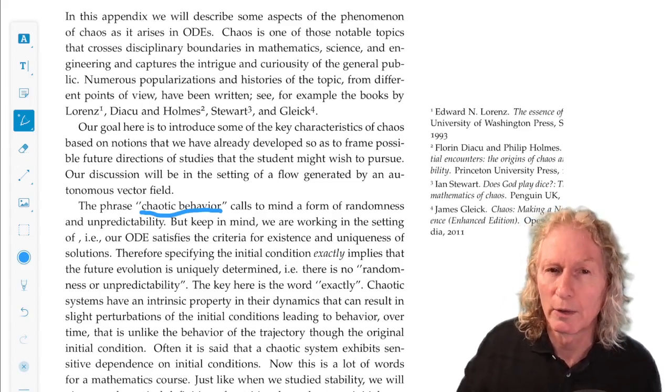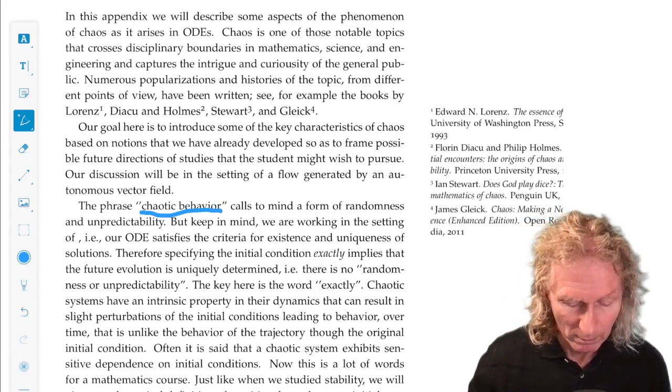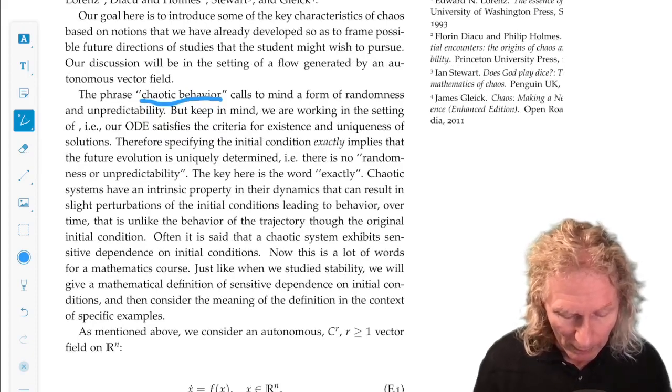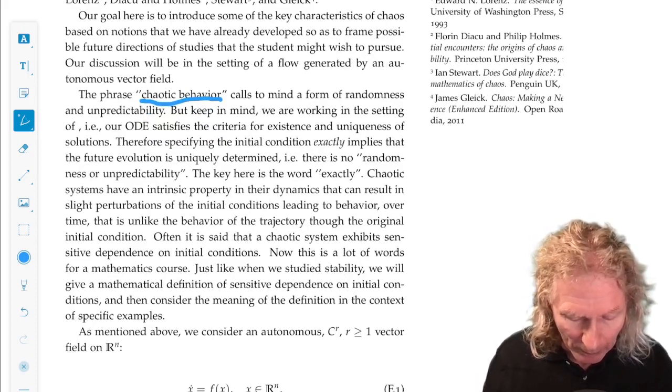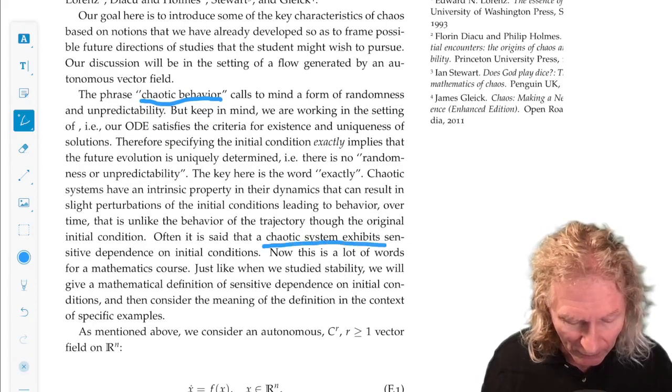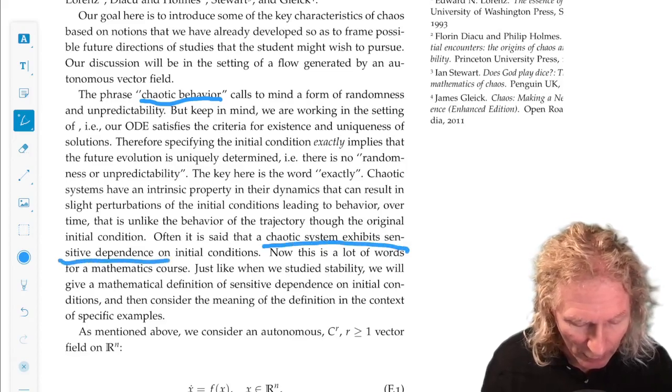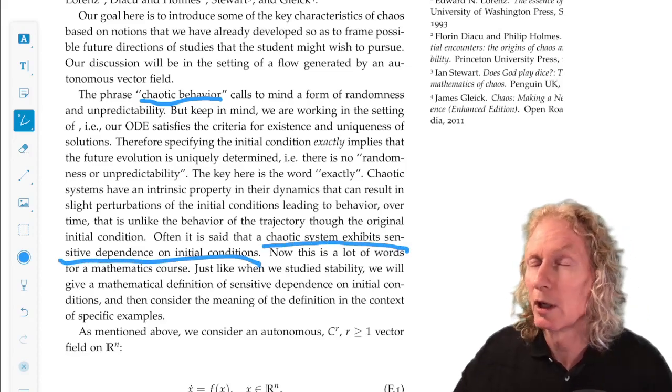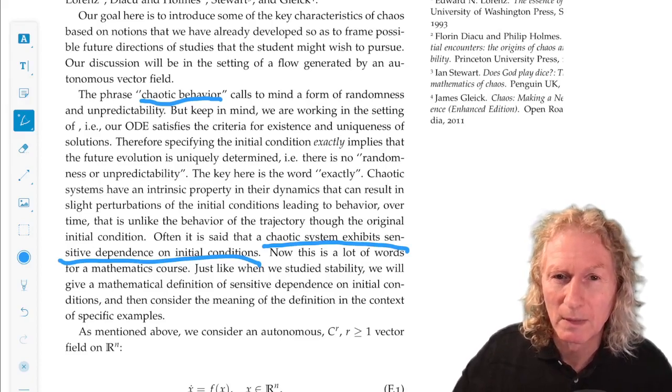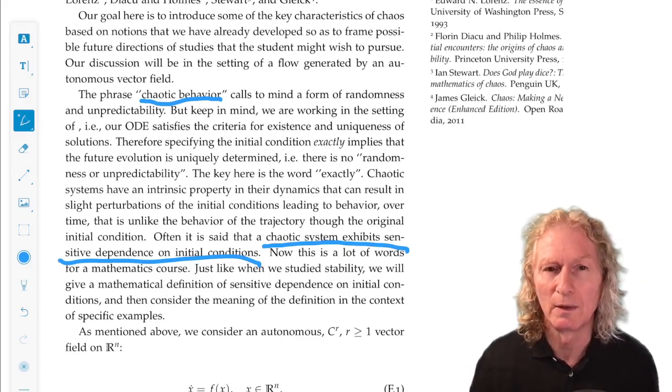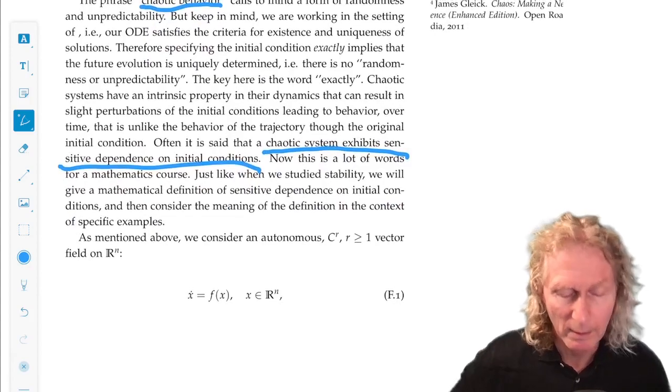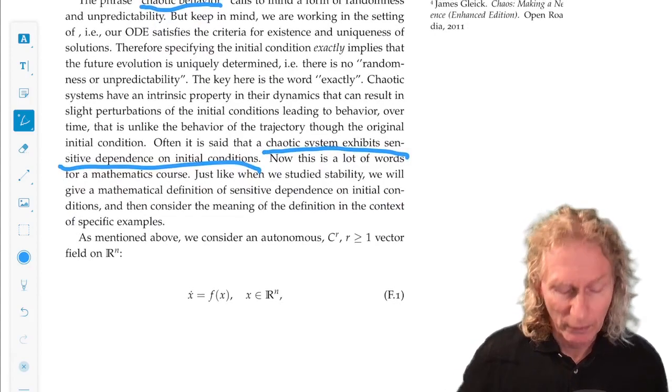Chaotic systems have this intrinsic property that they can magnify any imprecision in initial conditions in such a way that the outcome over a given period of time looks unpredictable. So I want to talk about what are the key features. Often it's said that chaotic systems exhibit sensitive dependence on initial conditions.